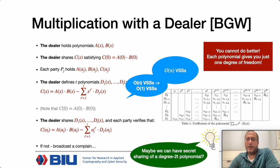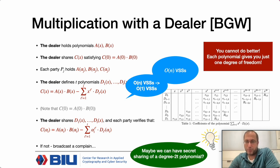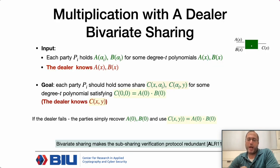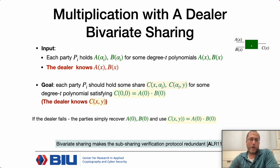The key idea is that maybe we can do secret sharing of a polynomial of degree 2t instead of degree t. We are going to follow a different invariant than that of BGW: we assume each wire is hidden using a bivariate polynomial of degree t in both variables, not just a univariate polynomial as in BGW.